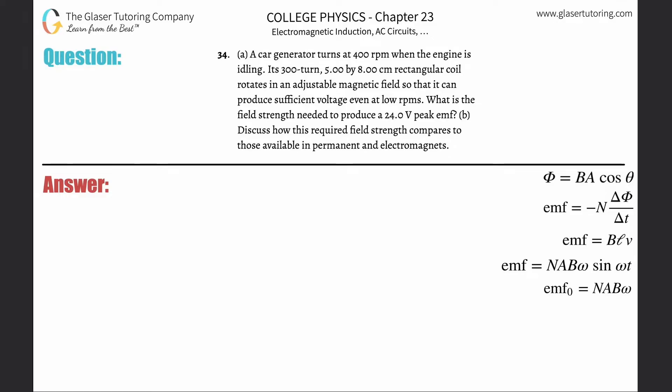Problem 34, letter A: A car generator turns at 400 revolutions per minute when the engine is idling. Its 300-turn, 5 by 8 centimeter rectangular coil rotates in an adjustable magnetic field so that it can produce sufficient voltage even at low RPMs. What is the field strength needed to produce 24 volts of peak EMF?